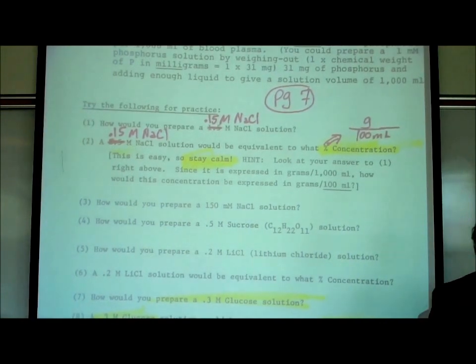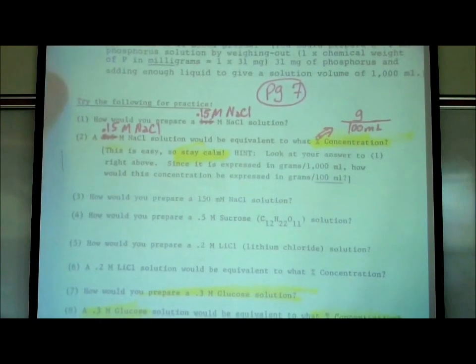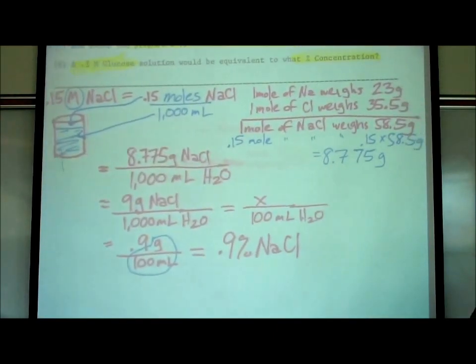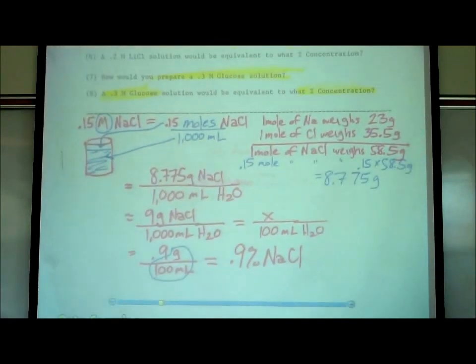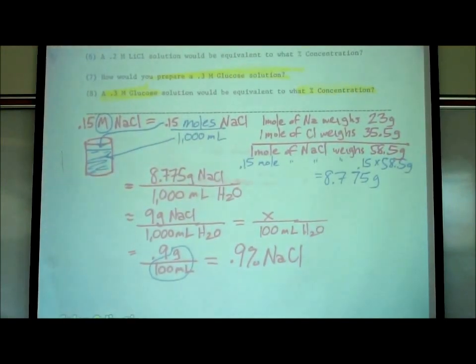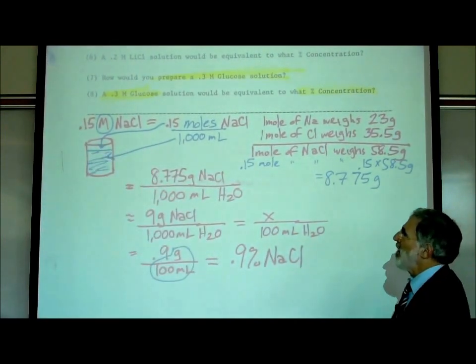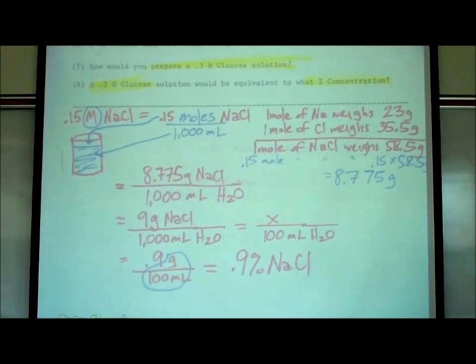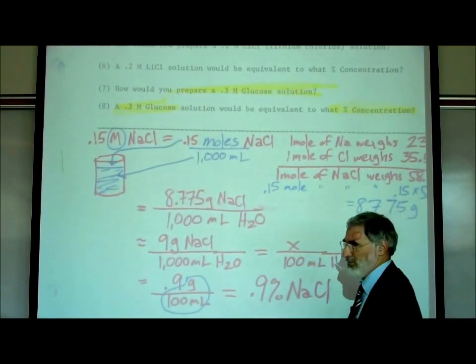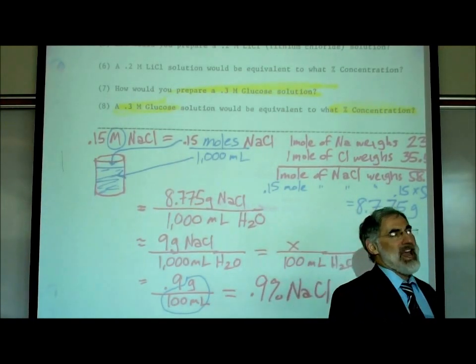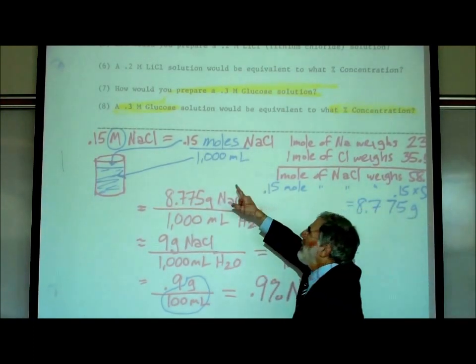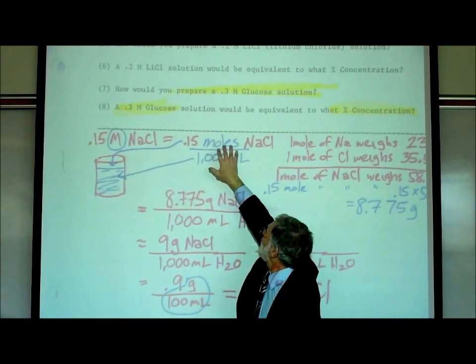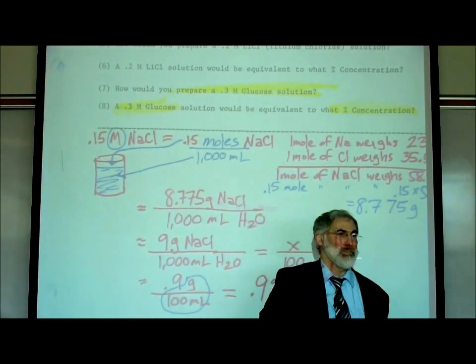You can write this on any piece of paper, or you could just write it lower down on the page, right below the dash line, which is what I did. Now, the first thing it said, the question number one says, how would you prepare a 0.15 molar salt solution? Before you worry about pulling out your calculator, what does the capital letter M stand for? It stands for, and I wrote it in blue, moles per liter, or moles per thousand milliliters.